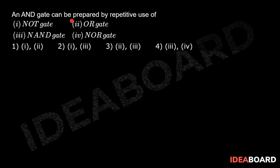An AND gate can be prepared by repetitive use of NAND or NOR gates. We have been given 4 gates, and we know that NAND gate and NOR gate are universal gates — by using them, any kind of gate can be made. So option number 4 is the correct answer of this problem.